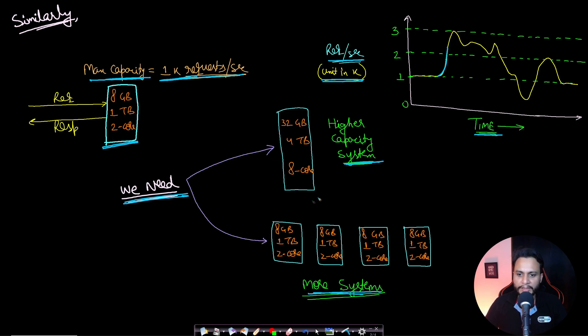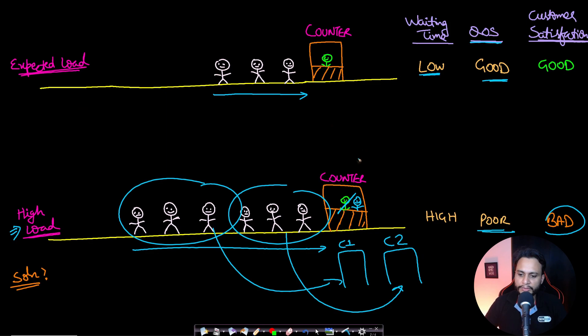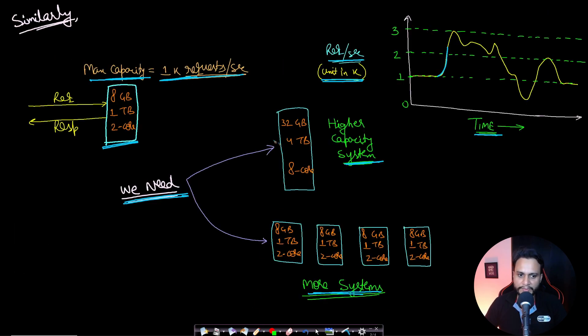This is increasing the efficiency of the same system. This is one way. In the other example of the ticket counter, what we did was we were increasing the number of ticket counters keeping the person efficiency same. So in this case as well, keeping the system same, we can just add more systems. If we can add 4 more systems, it will be very similar in its functionality and hence it can take 4 times the load. So both these approaches are good.